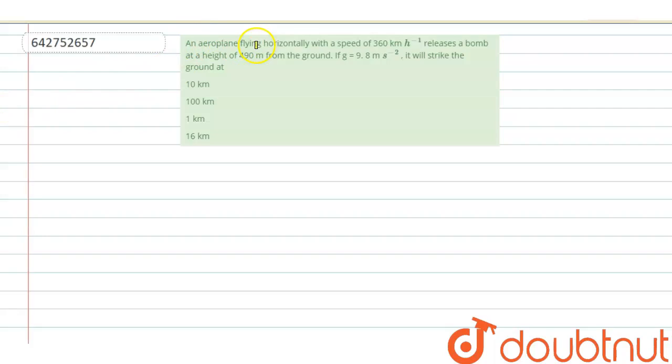aeroplane flying horizontally with a speed of 360 kilometer per hour releases a bomb at a height 490 meter from the ground. If g is 9.8